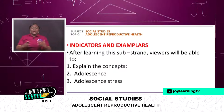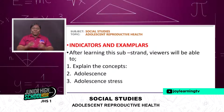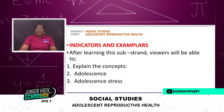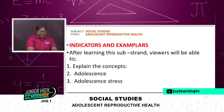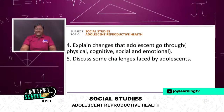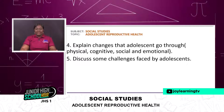In our previous lesson we had indicators. As we also have indicators in this lesson, let's look at the indicators on your screen. After the learning, viewers will be able to: 1. Explain the concept of adolescence. 2. Explain the concept of adolescent stress. 3. Explain the changes that adolescents go through — that is the physical, cognitive, social, and emotional. 4. Discuss some challenges that adolescents face.